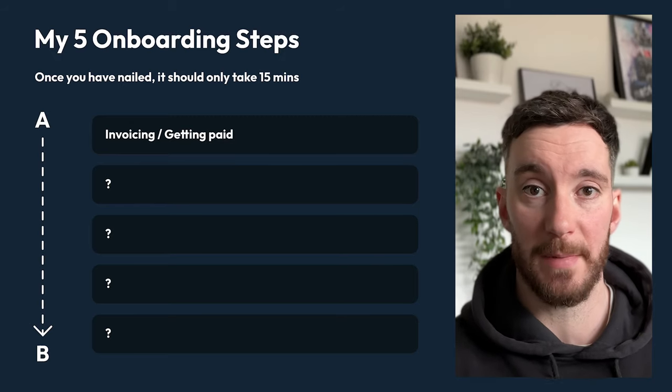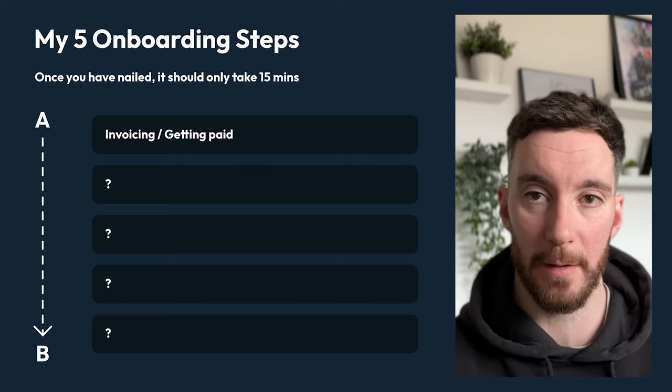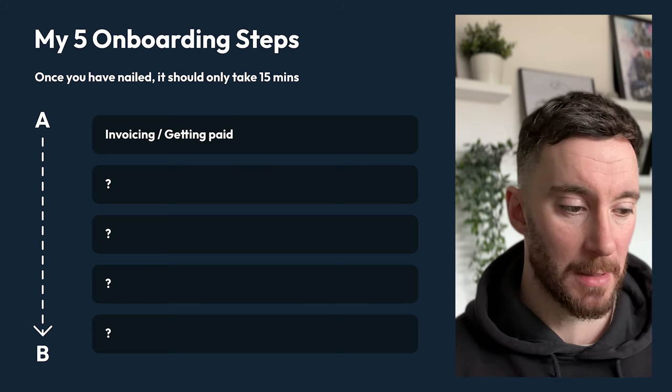Step one — and I've already mentioned this, it's the most important step — is getting paid, or invoicing. There are many ways to collect payment, but the way we do it, we rely on Stripe. The reason we rely on Stripe is it's secure, it's efficient, it keeps all of our transactions in one place, and it keeps our customer's card on file. If there are any problems where they're refusing to pay us, we have it in our agreement that once a project is accepted, finalized, and live, we take that final payment automatically. That's why we use Stripe.